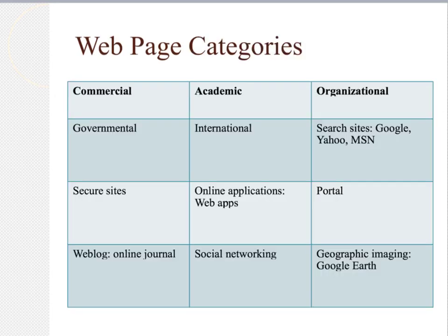There are many different web page categories. We use web apps such as Outlook, Google Drive, and Dropbox. We also use social networking. And most commonly we use search engines — sites like Google, Yahoo, and MSN. These sites can all be broken down in a variety of ways.